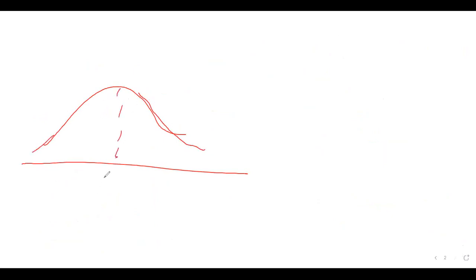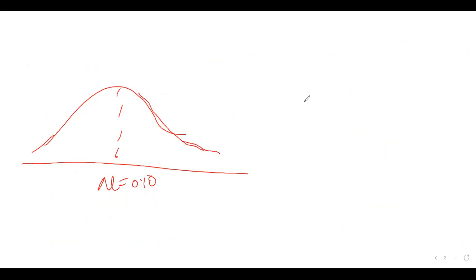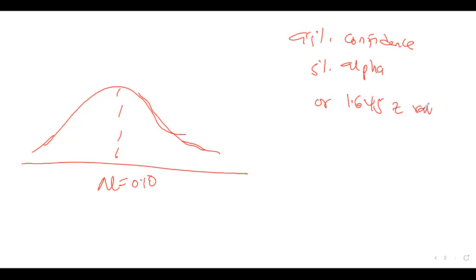The third approach uses the actual proportion values directly. We have a population proportion of 0.10, tested at 95% confidence — that is, 5% alpha or a critical z-value of 1.645 for one tail. That is why we must learn to read the z-tables for one-tailed tests.